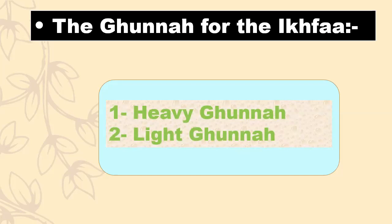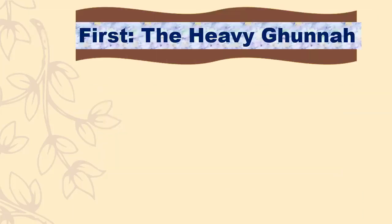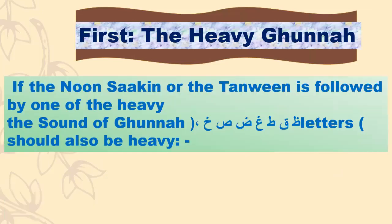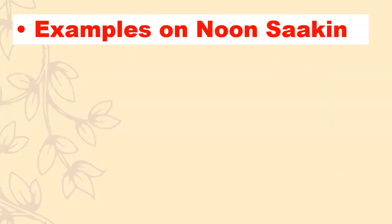The reader is also required to make Gunna for two beats. There are two types of Gunna: a heavy Gunna and a light Gunna. First, the heavy Gunna — if the Noon Sakin or the Tanwin is followed by one of the heavy letters, the sound of Gunna should also be heavy.